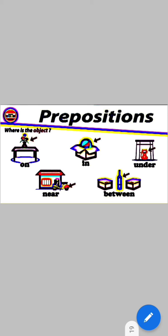Now let us revise, children. The prepositions we studied today: in the first picture, the vase is kept on the table. The ball is kept inside or in the box. The cat is standing under the table. And the scooter is standing near the house. So all four words are telling us the position of the object, and hence prepositions are called position words.